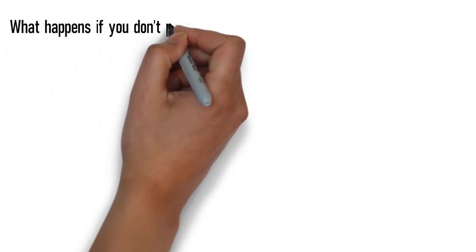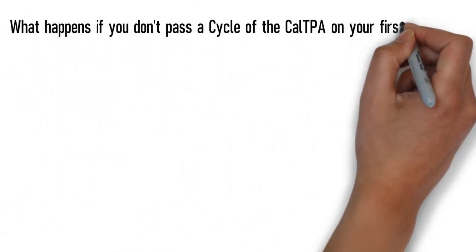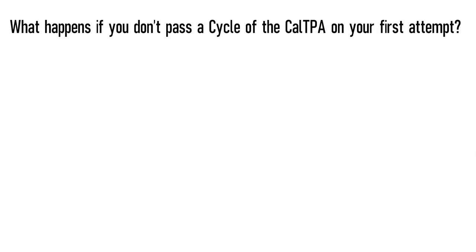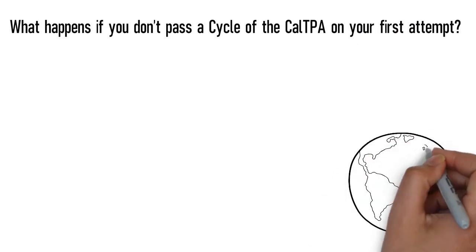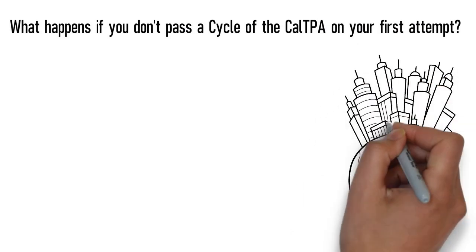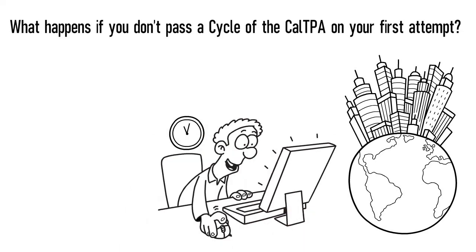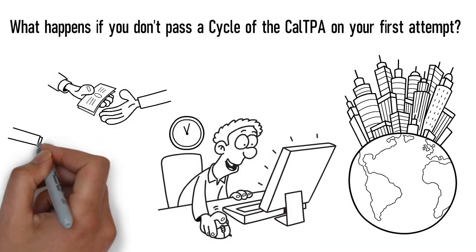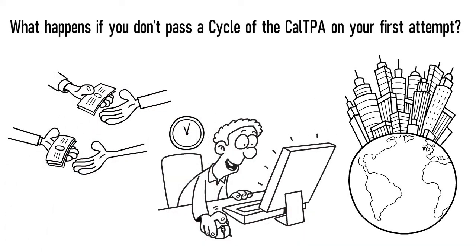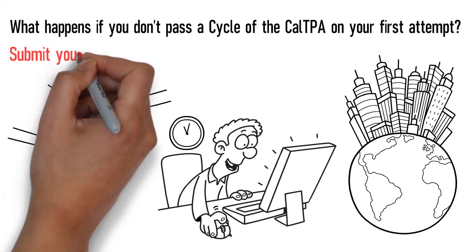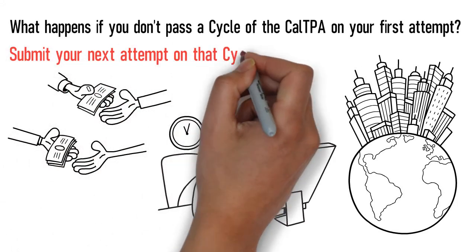What happens if you don't pass a cycle of the CalTPA on your first attempt? While high stakes, it is not the end of the world. Multiple attempts can be made, and you have many resources to help you make another attempt. All failing scores require the candidate to pay again, register, complete, and submit your next attempt on that cycle to CalTPA.